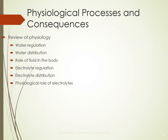Fluid and electrolyte imbalances can cause impaired perfusion, impaired gas exchange, impaired cerebral function, and impaired neuromuscular function. A normal volume of extracellular fluid is necessary to provide tissue perfusion and deliver oxygen to cells. Moderate or severe extracellular volume deficit reduces tissue perfusion by decreasing blood pressure; very severe deficit leads to hypovolemic shock. Extracellular volume excess can also impair oxygenation because edematous fluid pushes cells farther from capillaries, increasing the distance oxygen must diffuse.